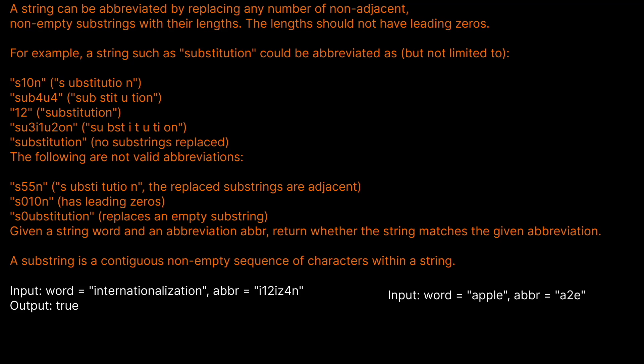For example, a string such as substitution could be abbreviated as s10n, because we have the s, then 10 characters, and then an n. So the 10 represents that middle portion.